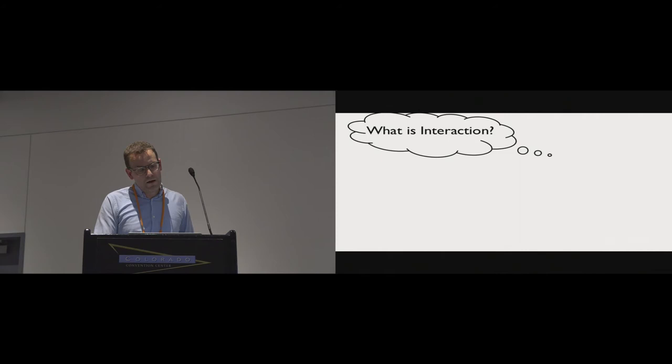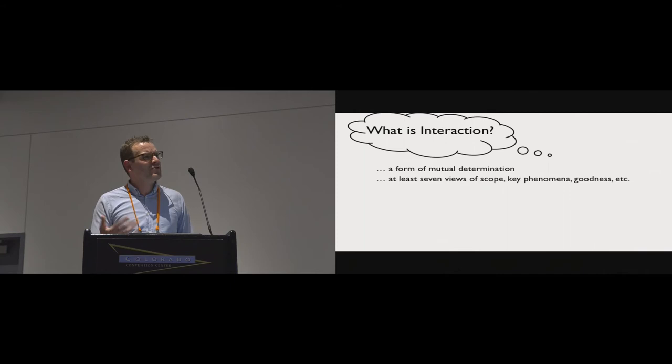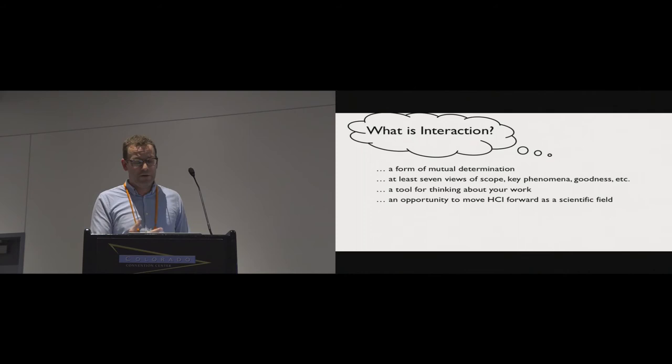So going back to the original social situation that I'm occasionally in, what should I have answered? I could have said following Bunge that interaction is a form of mutual determination, that's statistical, teleological, mechanical, or some other type. It spans at least seven quite different concepts in HCI that have very different implications, for instance for how we think about goodness or how we evaluate. We also believe that interaction is a useful tool for thinking about your work, for instance using this perspective shifting I mentioned. And I guess finally, the concept of interaction is an opportunity to really develop concepts or formulate propositions. And one way we think doing that is essential to moving forward HCI as a scientific discipline. And that's all. Thanks.